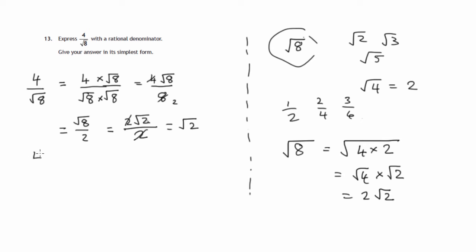Another slightly different way of doing it would be to do that simplification of the root 8 first, doing the 4 times 2 and the square root of 4 times square root of 2, 2 root 2. We do that at this stage. And then we can multiply the top and bottom of this fraction by the square root of 2.